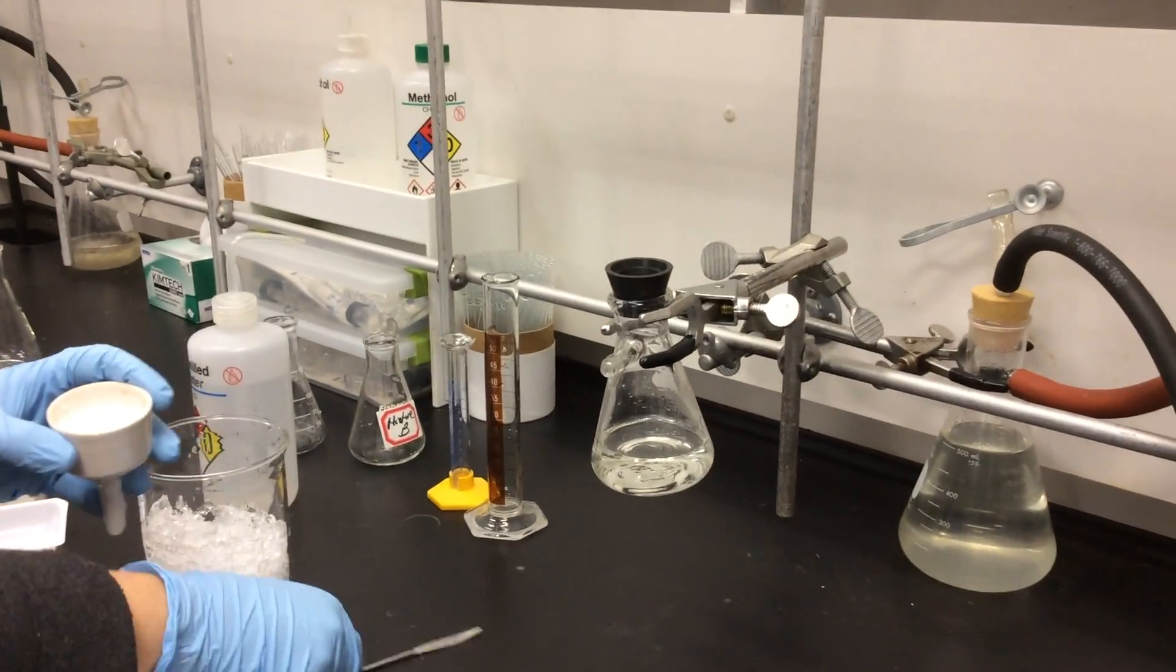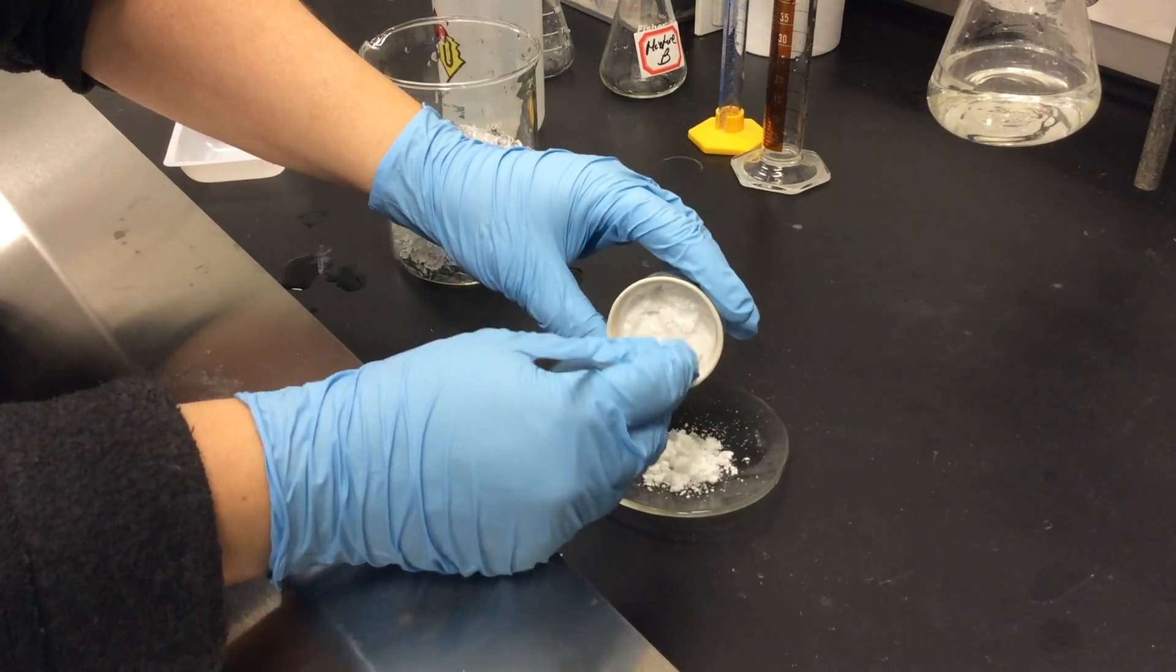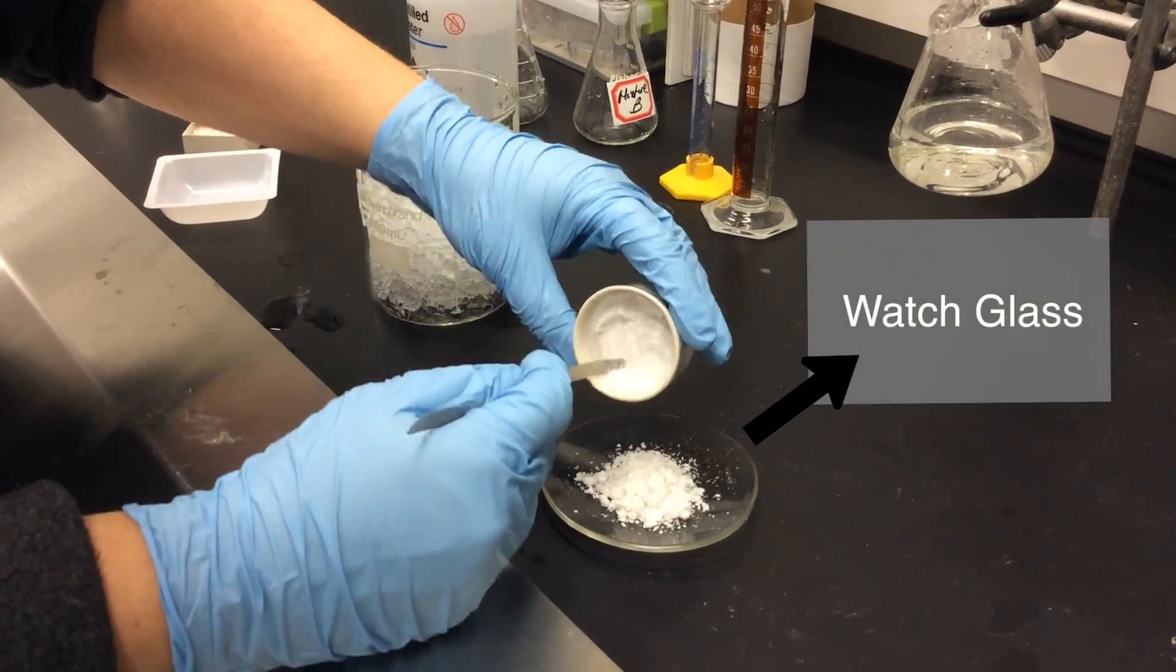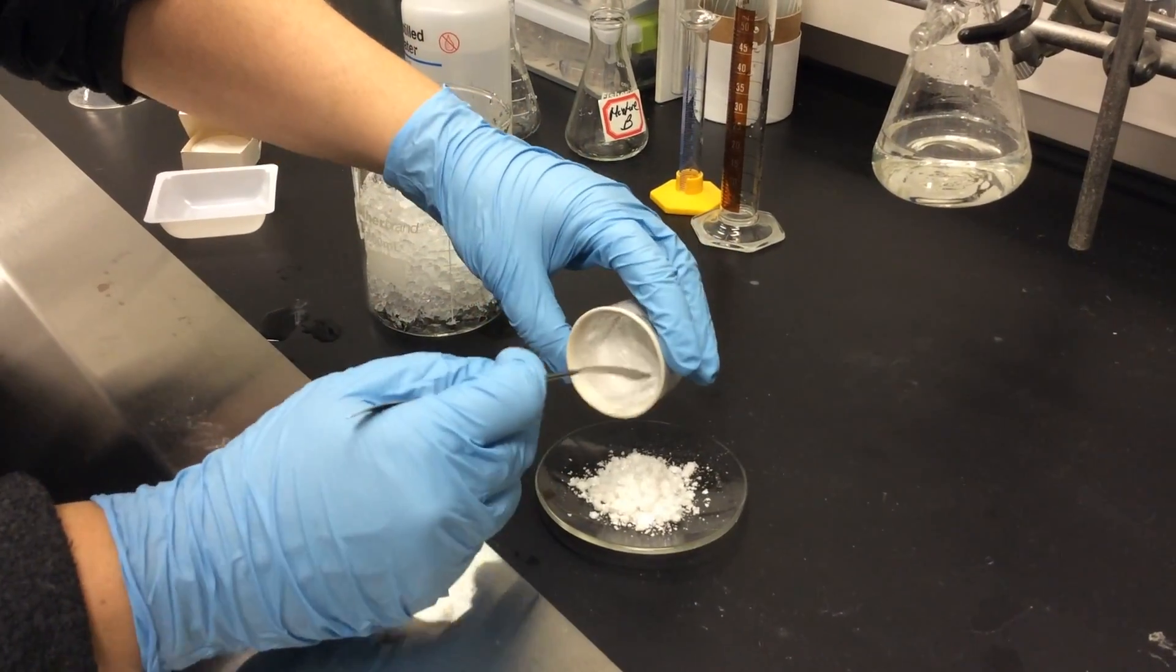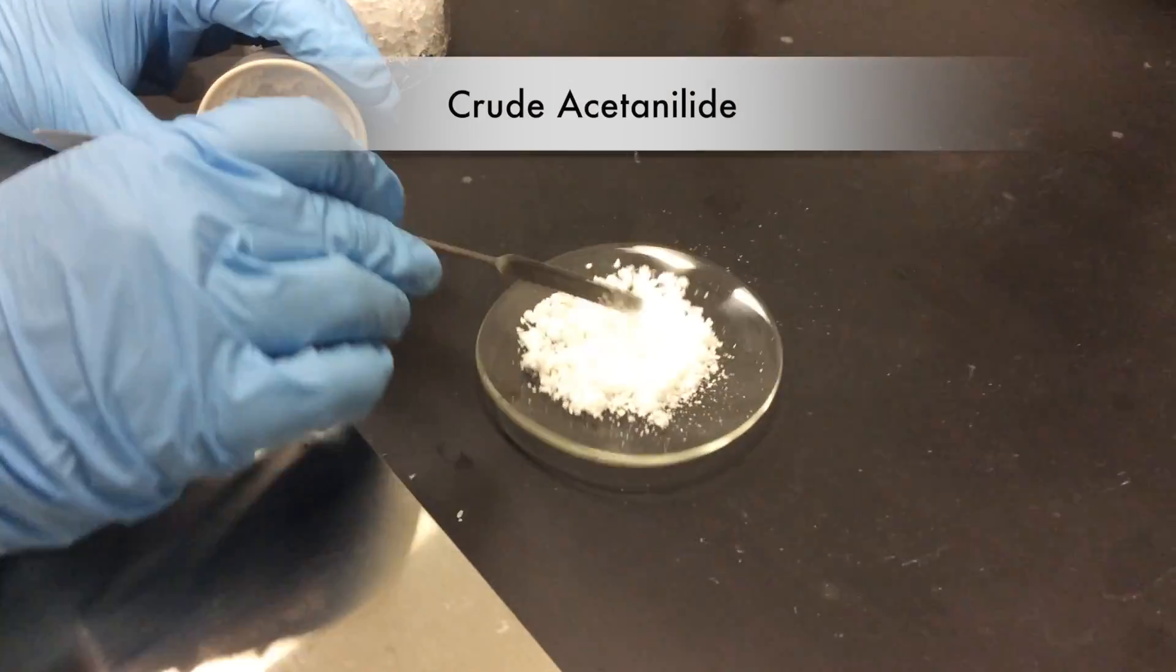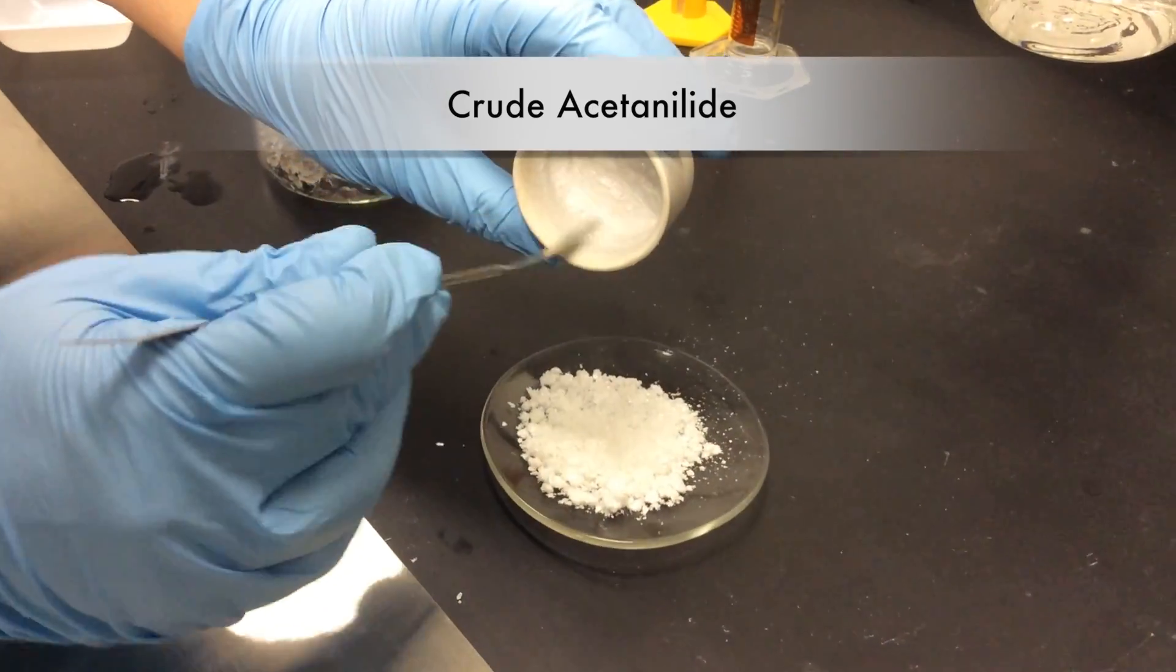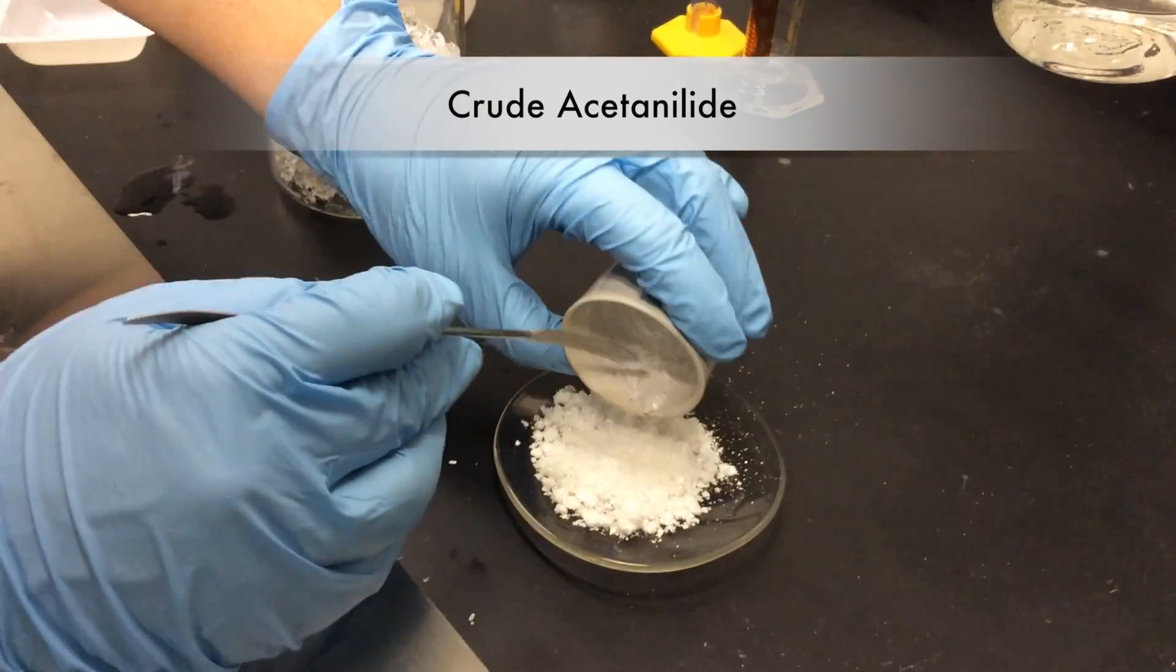Then take the Buchner funnel out of the flask, and just gently put your crystals onto a watch glass. You can see we're collecting all our nice white crystals here. And be careful to gingerly only take out the crystals and not the filter paper. You can see I'm breaking up the crystals, so the maximum amount of surface area is exposed to the air, so that we can get maximum amount of drying.